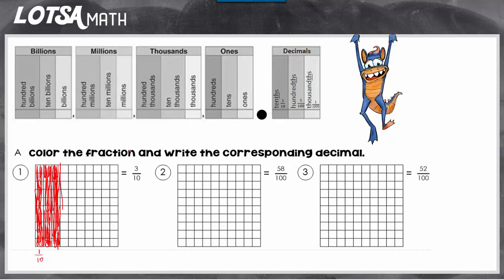There is a corresponding decimal, and what that means, it's a matching decimal. If we wanted to write three tenths as a decimal, we have to use place value.